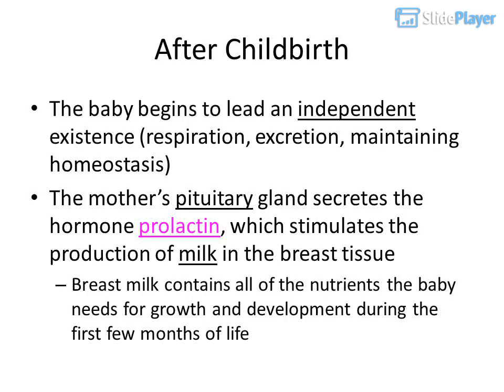After childbirth, the baby begins to lead an independent existence, including respiration. The mother's pituitary gland secretes the hormone prolactin, which stimulates the production of milk in the breast tissue. Breast milk contains all of the nutrients the baby needs for growth and development during the first few months of life.